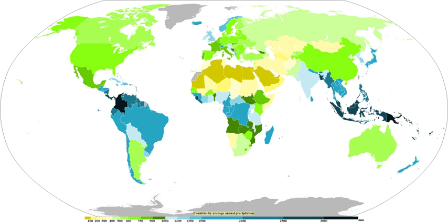The quantitative precipitation forecast (QPF) is the expected amount of liquid precipitation accumulated over a specified time period over a specified area. A QPF will be specified when a measurable precipitation type reaching a minimum threshold is forecast for any hour during a QPF valid period. Precipitation forecasts tend to be bound by synoptic hours such as 0000, 0600, 1200, and 1800 GMT. Terrain is considered in QPFs by use of topography or based upon climatological precipitation patterns from observations with fine detail.